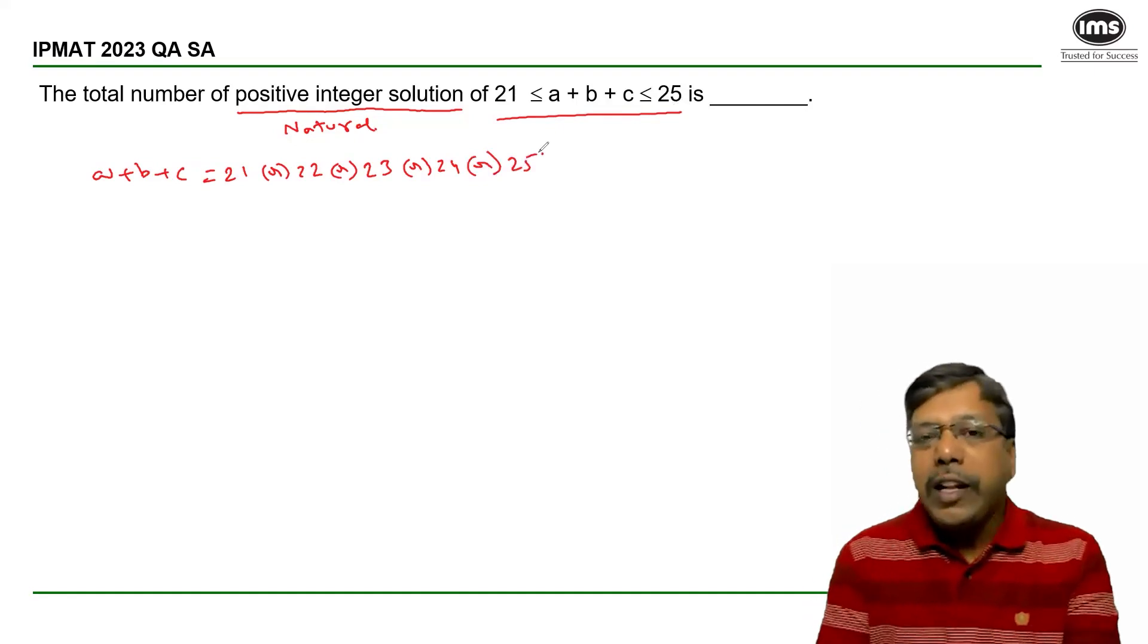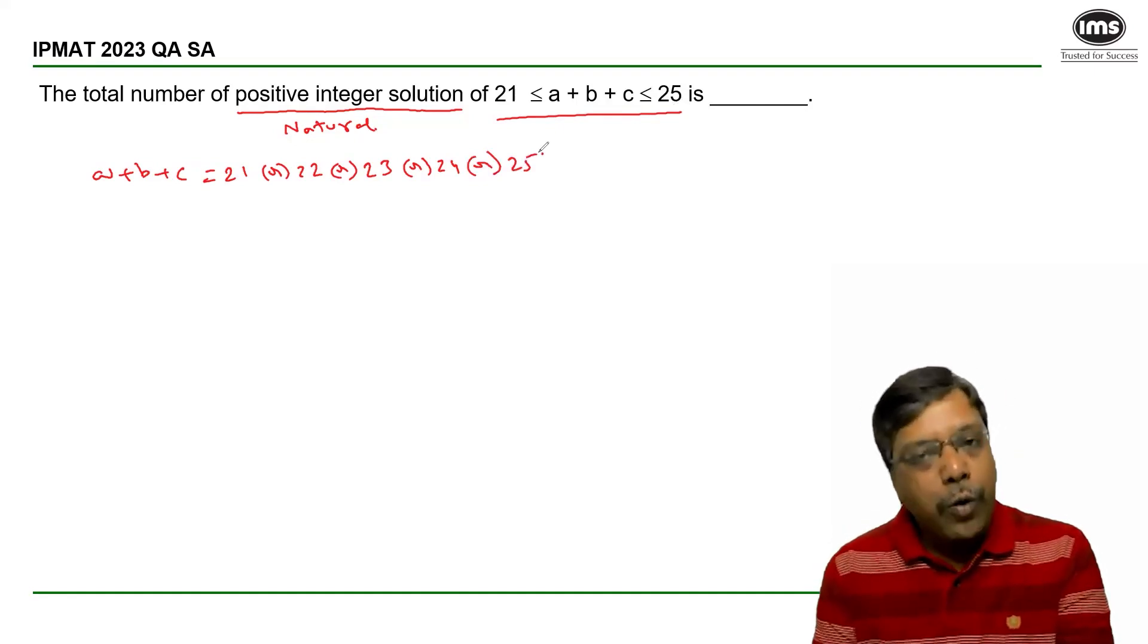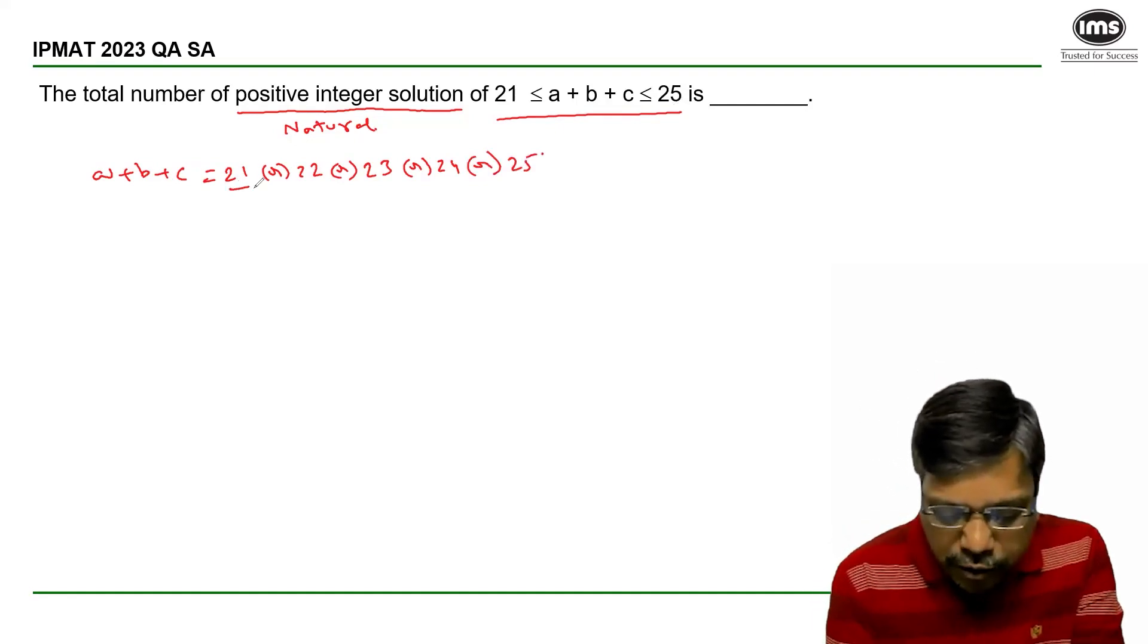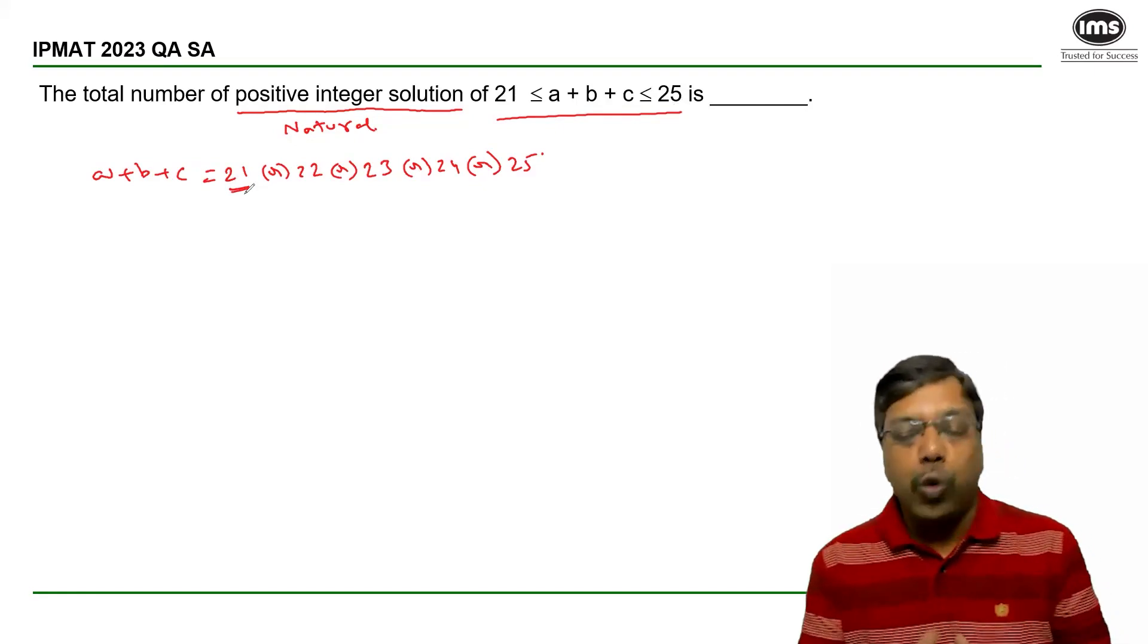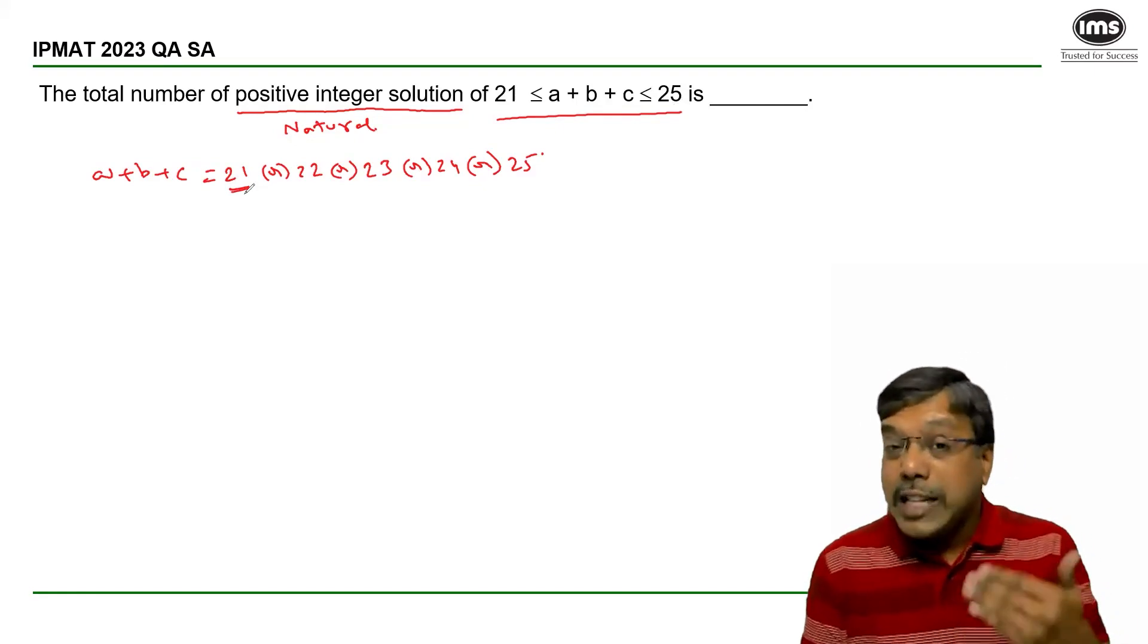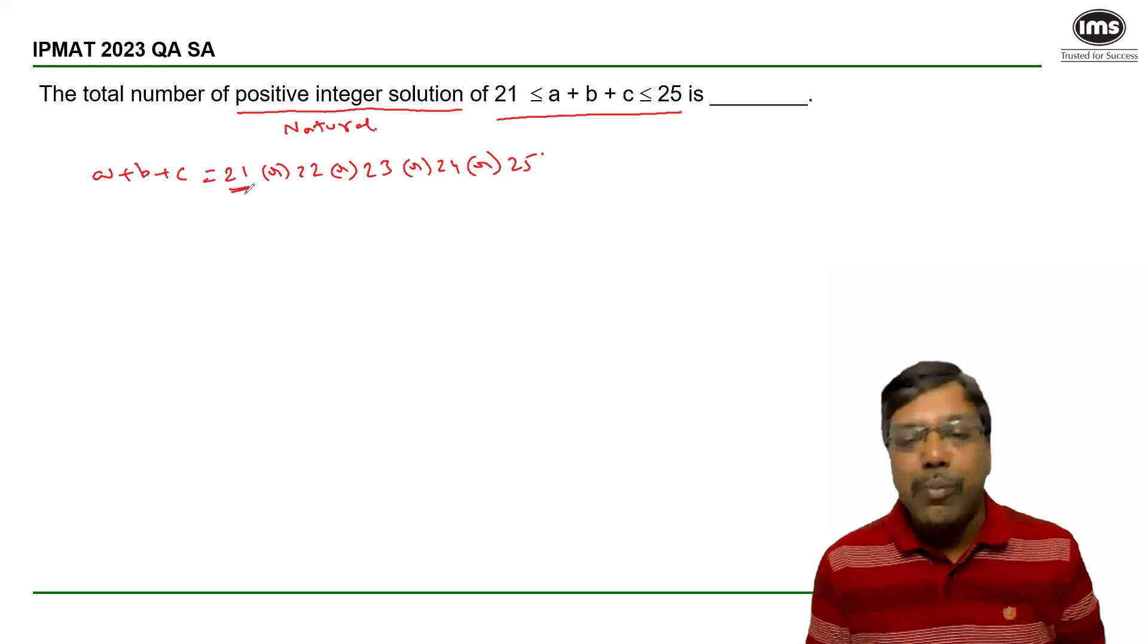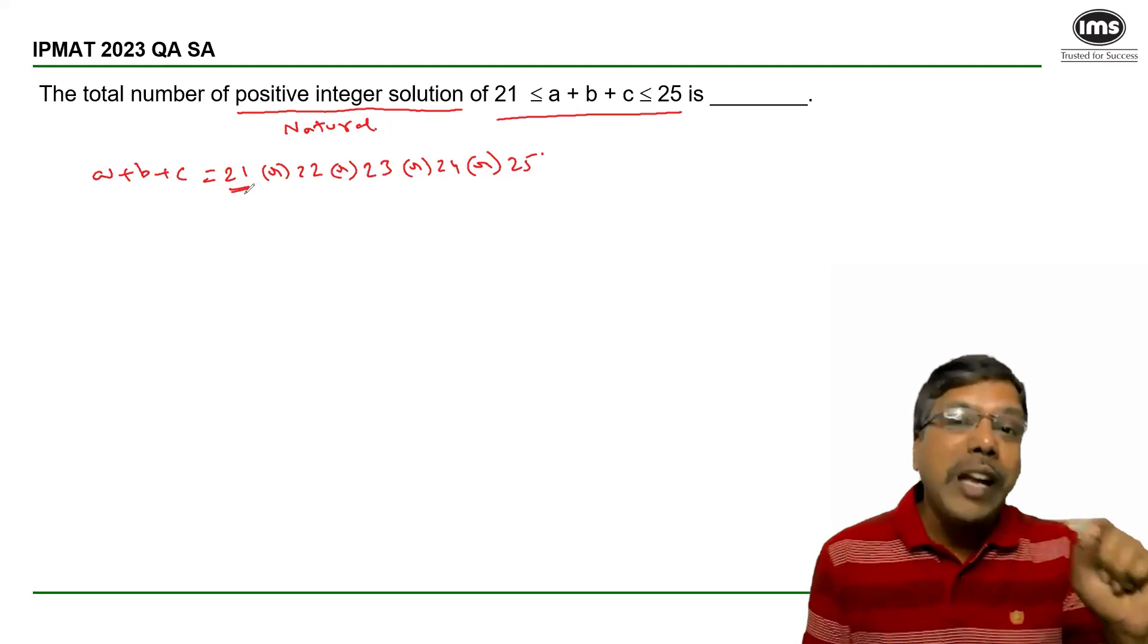We can apply the theory of partitioning here, where I have to divide 21 identical objects into 3 groups. But because A, B, C are natural numbers, none of them should be 0.